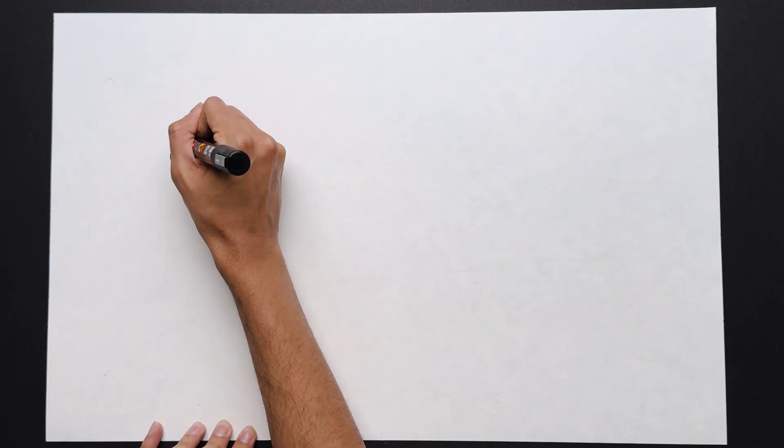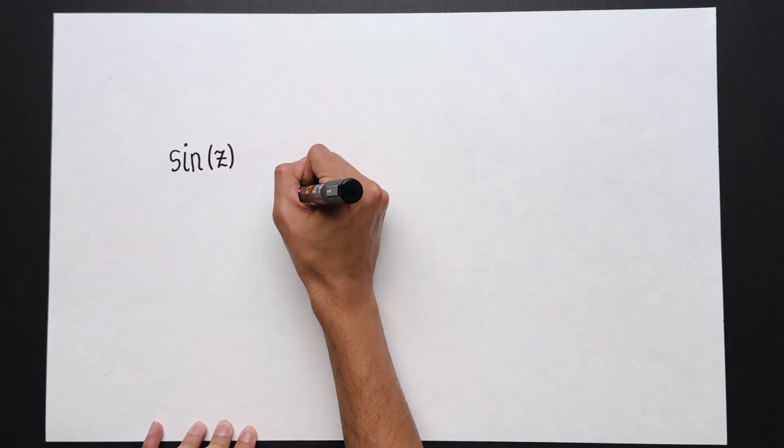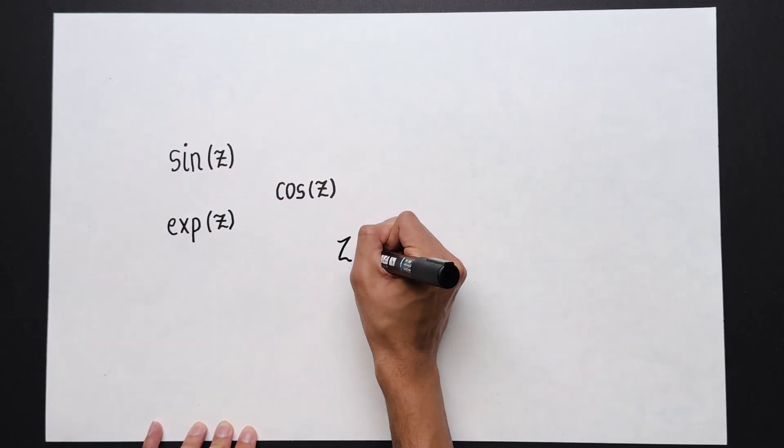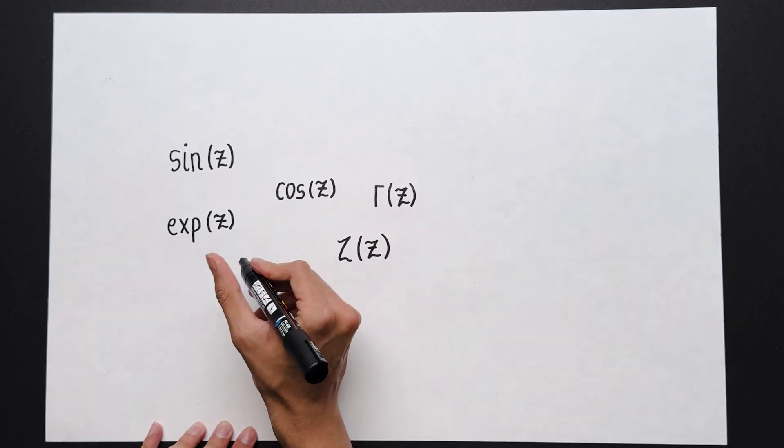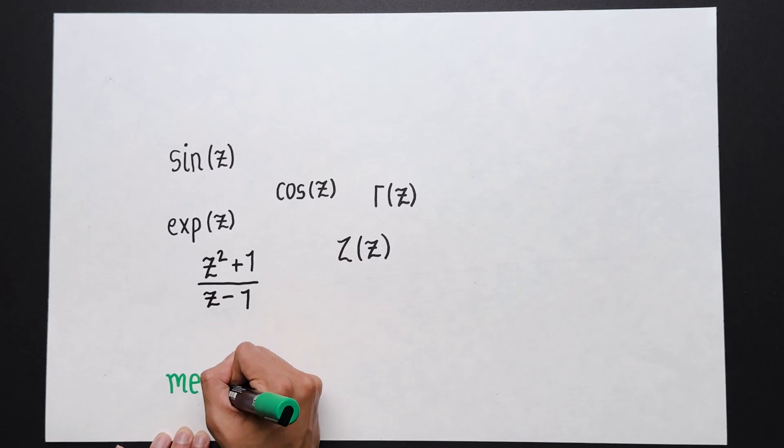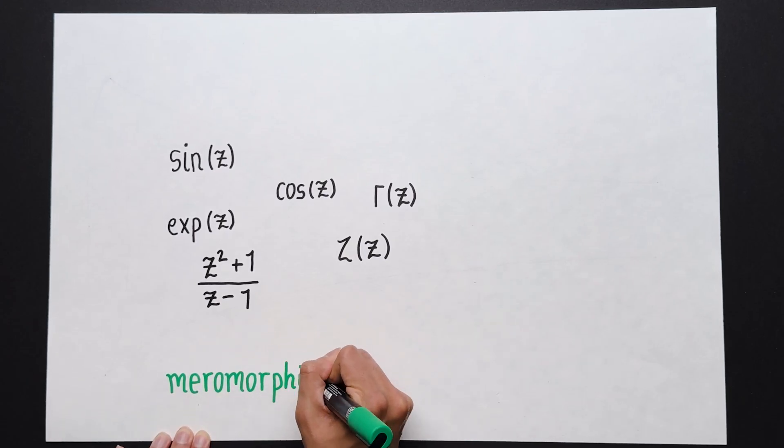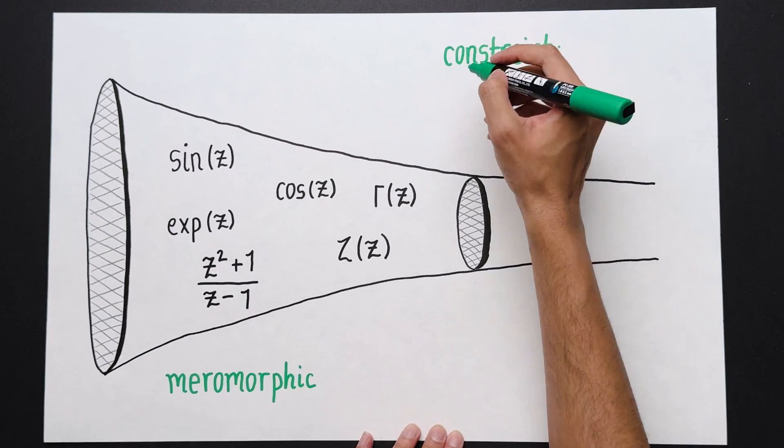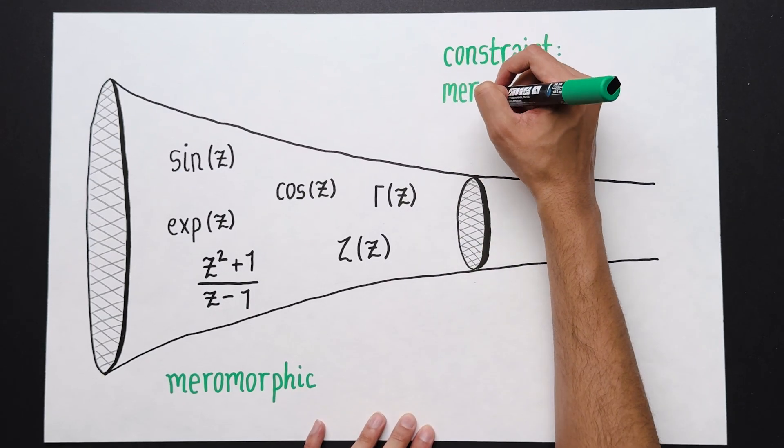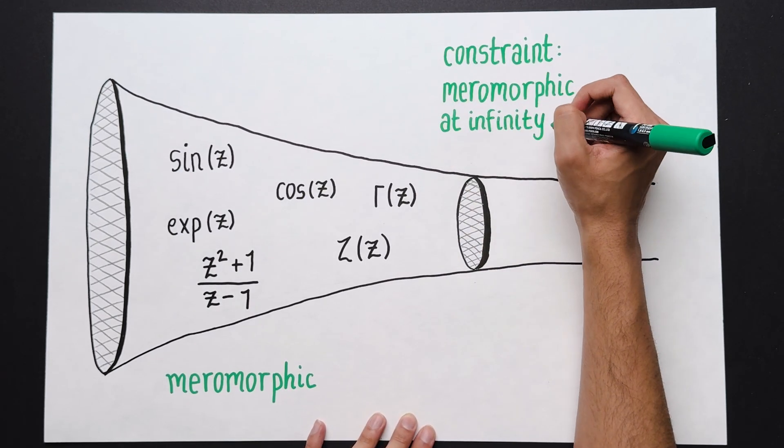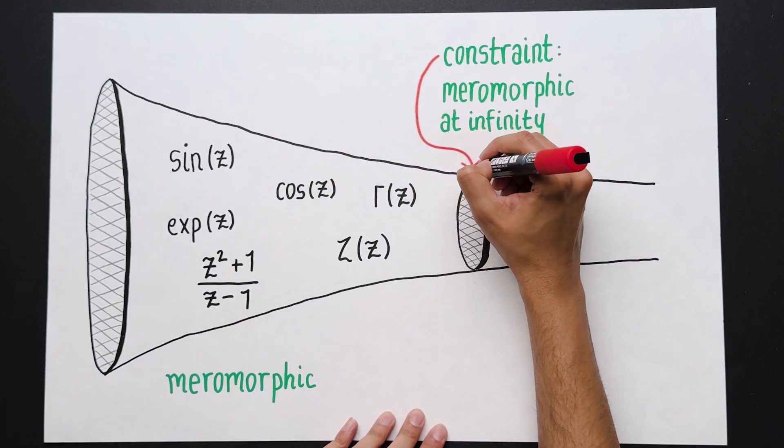If there's one thing to make clear, there are a lot of meromorphic functions on the complex plane. Trig functions, exponential functions, polynomials, rational functions, the gamma function, the Riemann zeta function, and all possible combinations of these things. It's a large and unmanageable space. What people noticed is that if you added a tiny constraint, then the space of meromorphic functions shrinks down to something much tinier, which ends up being more manageable. So what is the constraint?